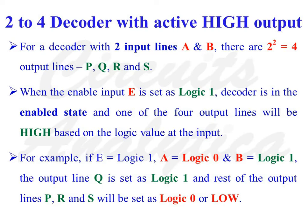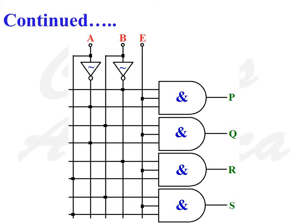Let us consider a 2-to-4 decoder with active high output. For a decoder with two input lines A and B, there are four output lines P, Q, R, and S. When the enable input E is set as logic 1, the decoder is enabled and one of the four output lines will be high based on the logic value at input ports A and B. For example, if enable E equals logic 1, A equals logic 0, and B equals logic 1, the output line Q is set as logic 1 and the rest of the output lines P, R, and S will be set as logic 0.